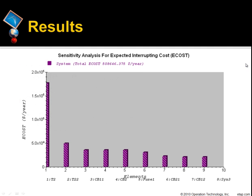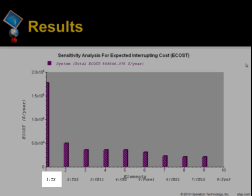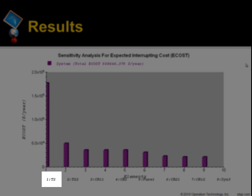Here we see an example of sensitivity analysis results for ECost and component ranking. The most contributed component for system total ECost is T2, and the least contributed component is SIN3.